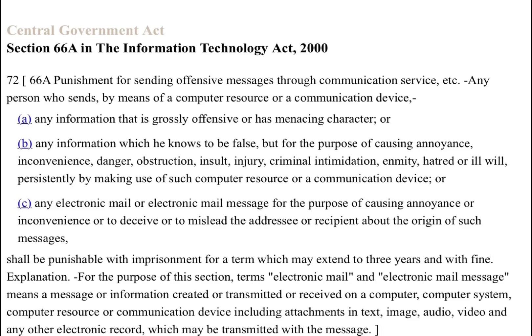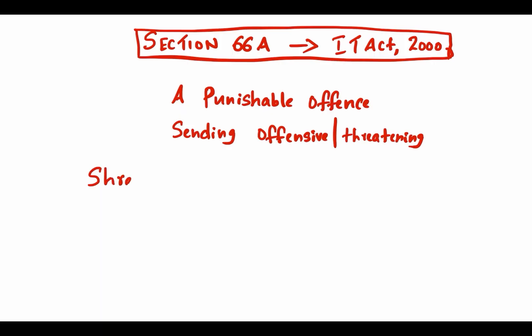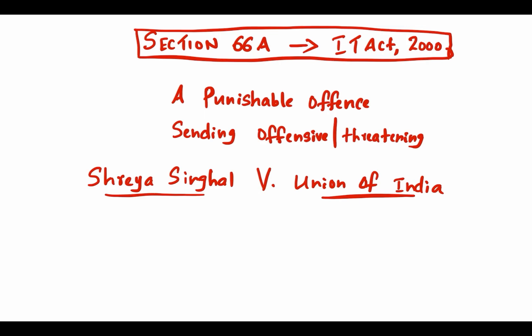The section also covers any person who sends information via computer resource or communication device that is grossly offensive, has a menacing or threatening character, or is information known to be false but sent for the purpose of causing annoyance, inconvenience, danger, insult, or injury. Such offenses are punishable with imprisonment extending to three years and a fine. The terms used in this section were gravely misused and many people were prosecuted for online speech. In the landmark case of Shreya Singhal versus Union of India (2015), the Supreme Court struck down Section 66A as unconstitutional.